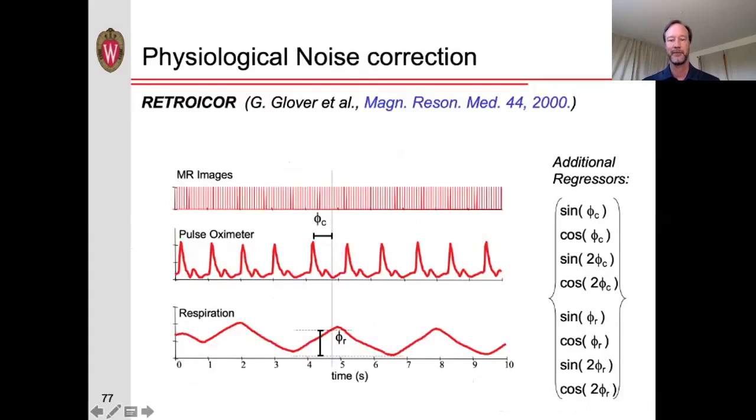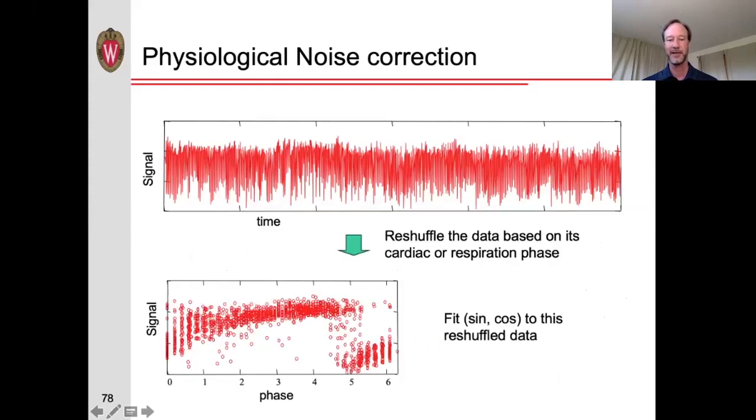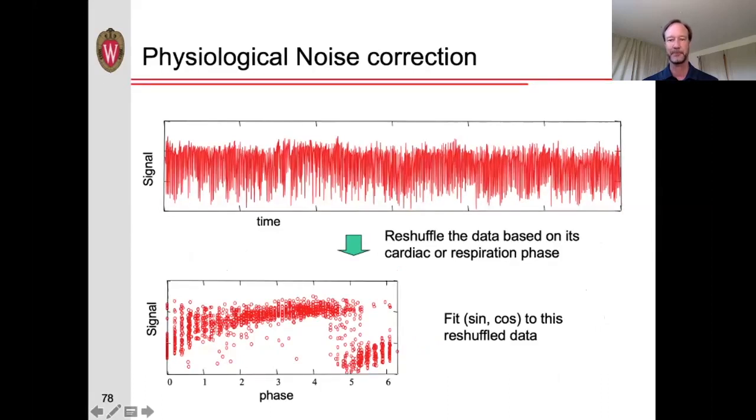How can we correct for that? One very common correction out there is what's called retro-ICOR, stands for retrospective image correction. The idea is that if you have actually measured the person's heartbeat and breathing, then you could calculate for every image the phase of the cardiac cycle and the phase of the respiratory cycle that that image was acquired in, and then you can create sines and cosines of those phases, and then remove those or regress those out of the data. Essentially, what that is equivalent to is taking your data and reshuffle it according to, say, the cardiac or respiratory phase. Let's say here we've reshuffled it according to the cardiac phase, and then we can fit a lower order of sine and cosine to this fluctuation, and then remove that from the data.